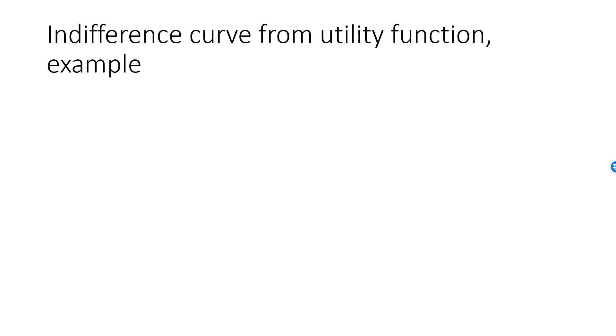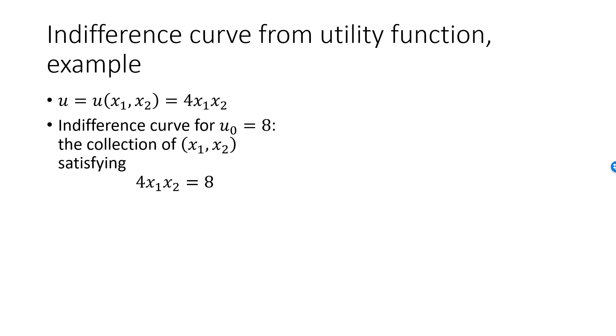Let's look at an example. Here is our simple utility function again. U is equal to 4x1x2. The indifference curve providing 8 units of utility is the level curve u equal to 8. That is, it's the collection of bundles x1, x2, satisfying the relationship 4x1x2 is equal to 8.